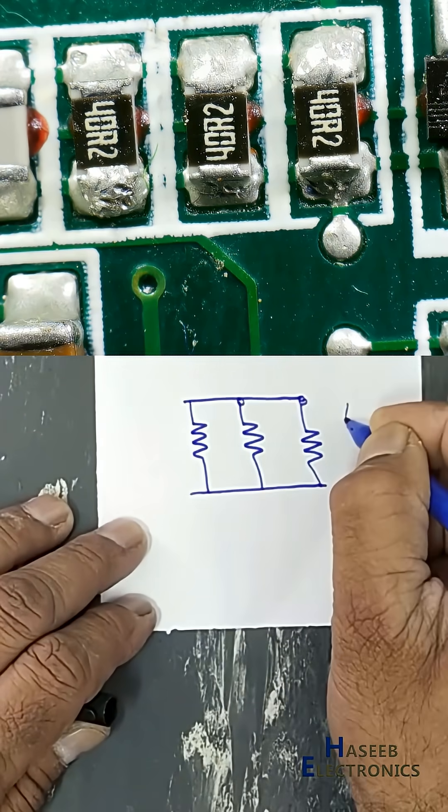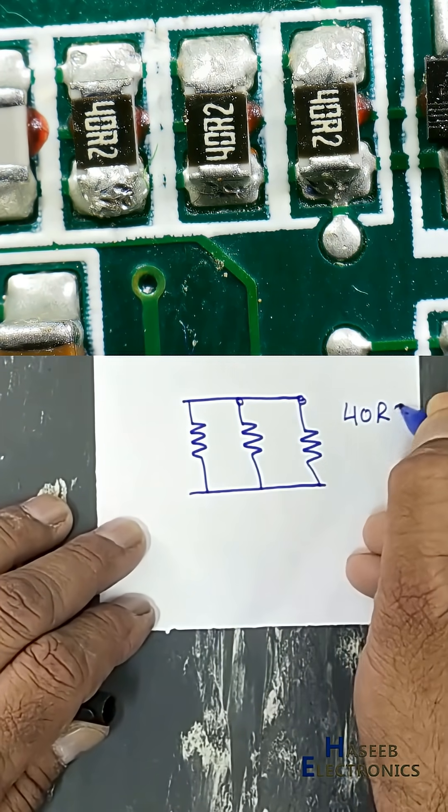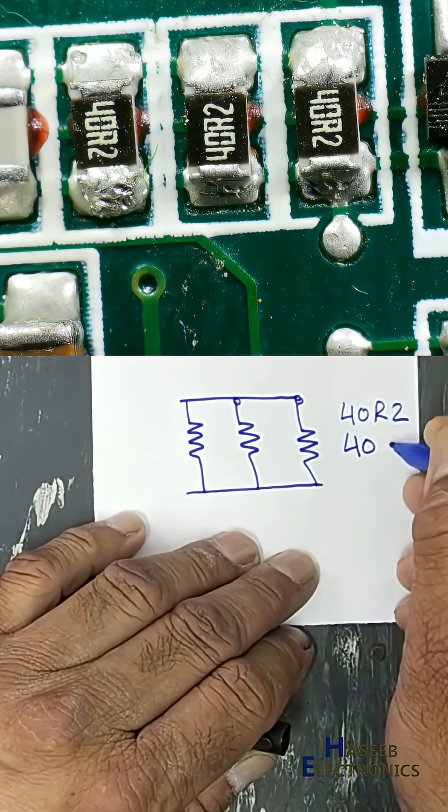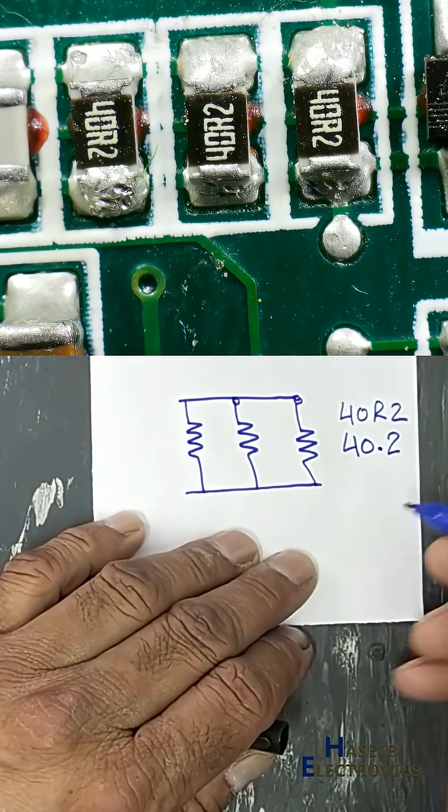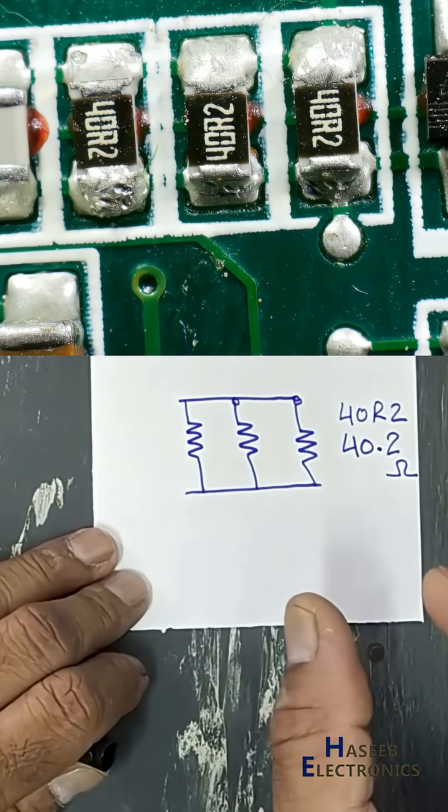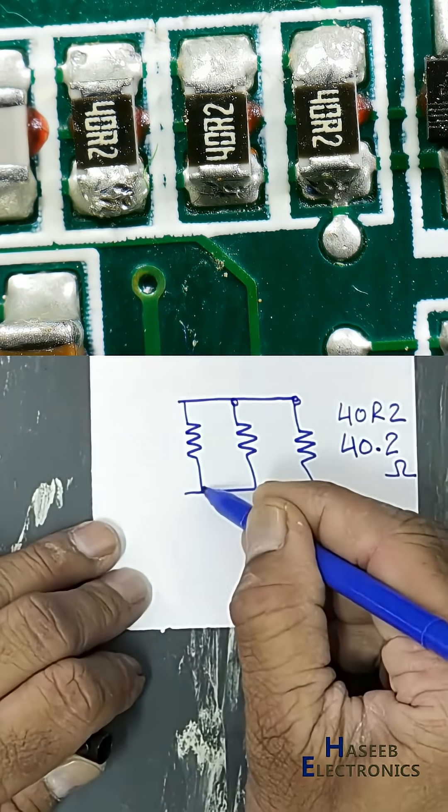Resistor marking 40R2 - it is RKM code. 40R is the decimal point, so 40.2 ohms. Three resistors in parallel when same value.